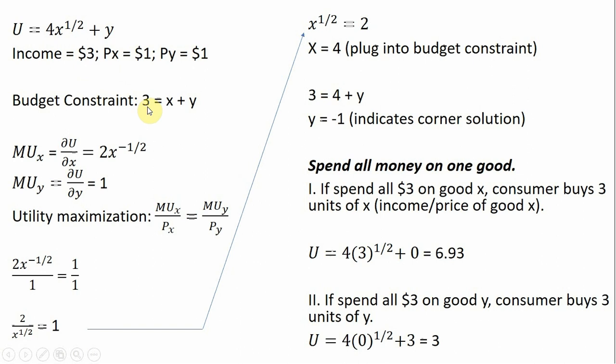Forming the budget constraint, income is $3 equals the price of good X times units of good X. So since the price of good X is $1, we don't have to show that. And then we have the price of good Y times units of good Y, and again, price of good Y is $1. So budget constraint simplifies down to something like this.